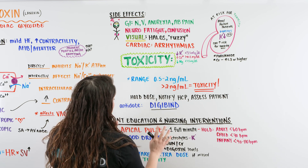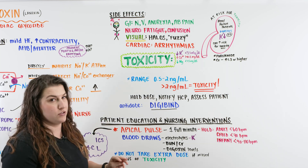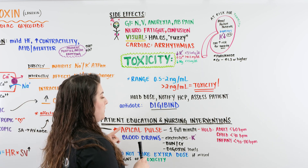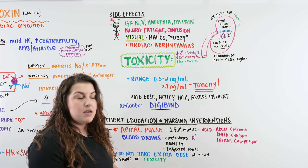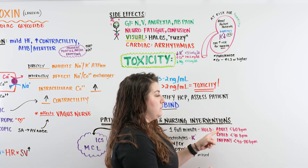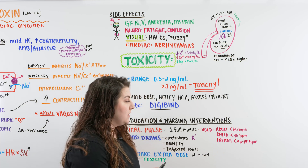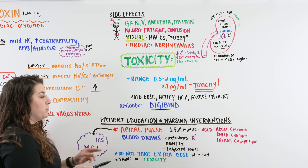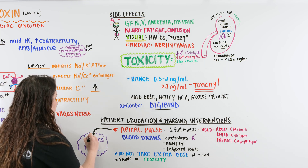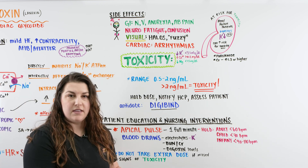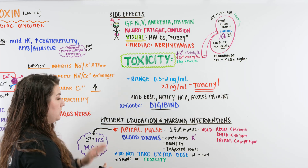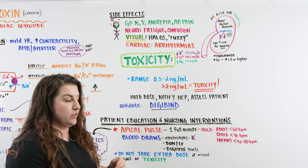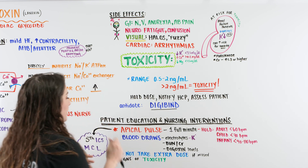When monitoring patients on Digoxin, assess the apical pulse for one full minute. Hold the medication if the heart rate is lower than 60 beats per minute in an adult, lower than 70 in a child, or lower than 90–110 in an infant. The apical pulse is at the fifth intercostal space, midclavicular line — the apex of the heart — where we listen for all valves for a full minute to catch any underlying arrhythmias.